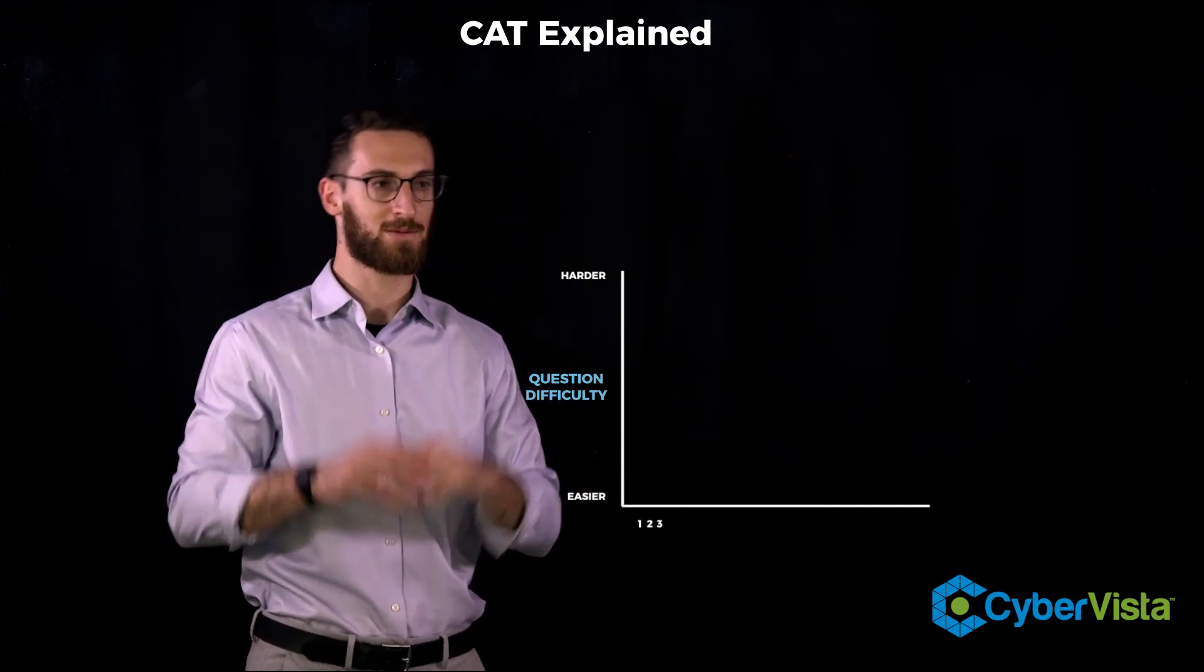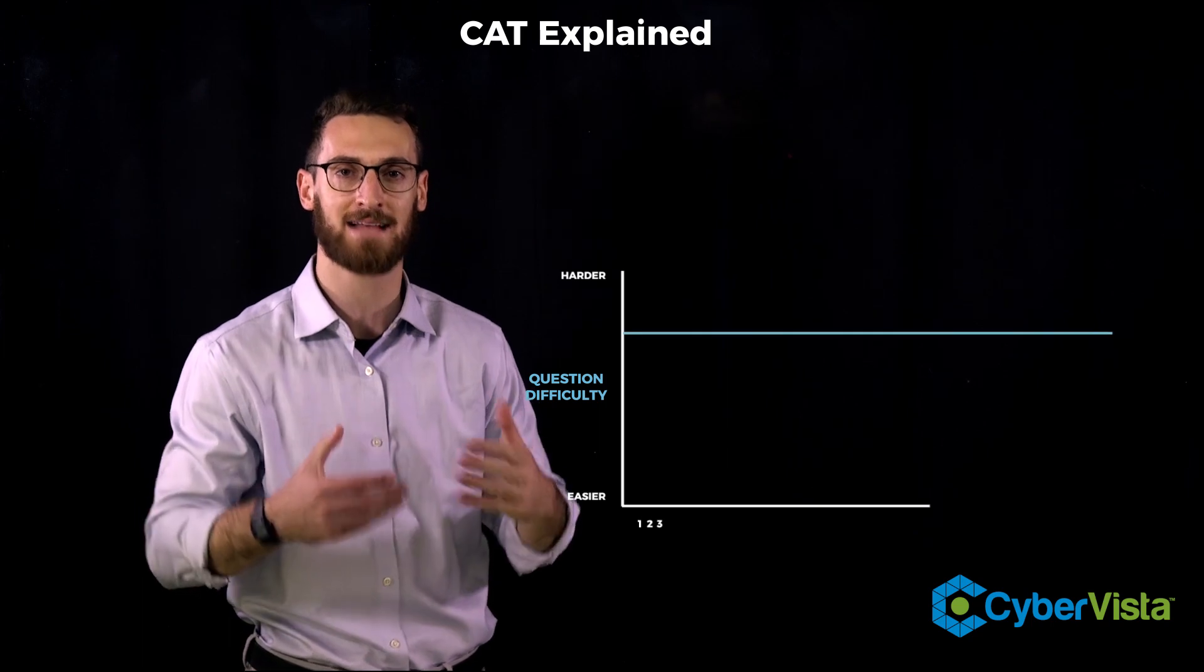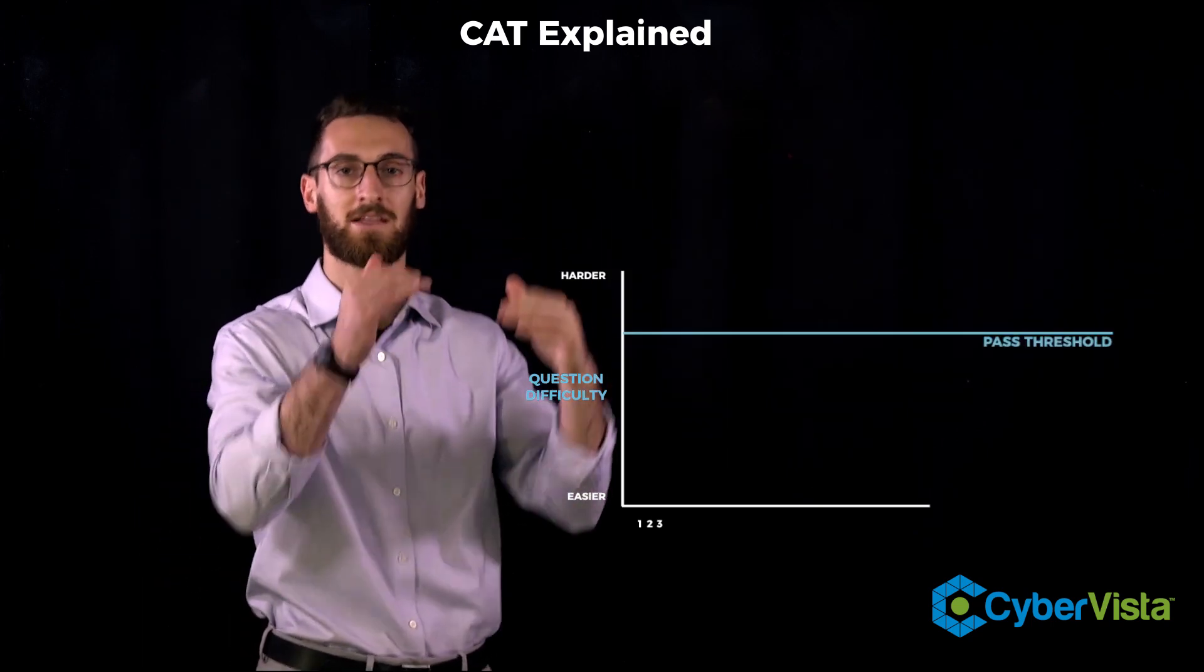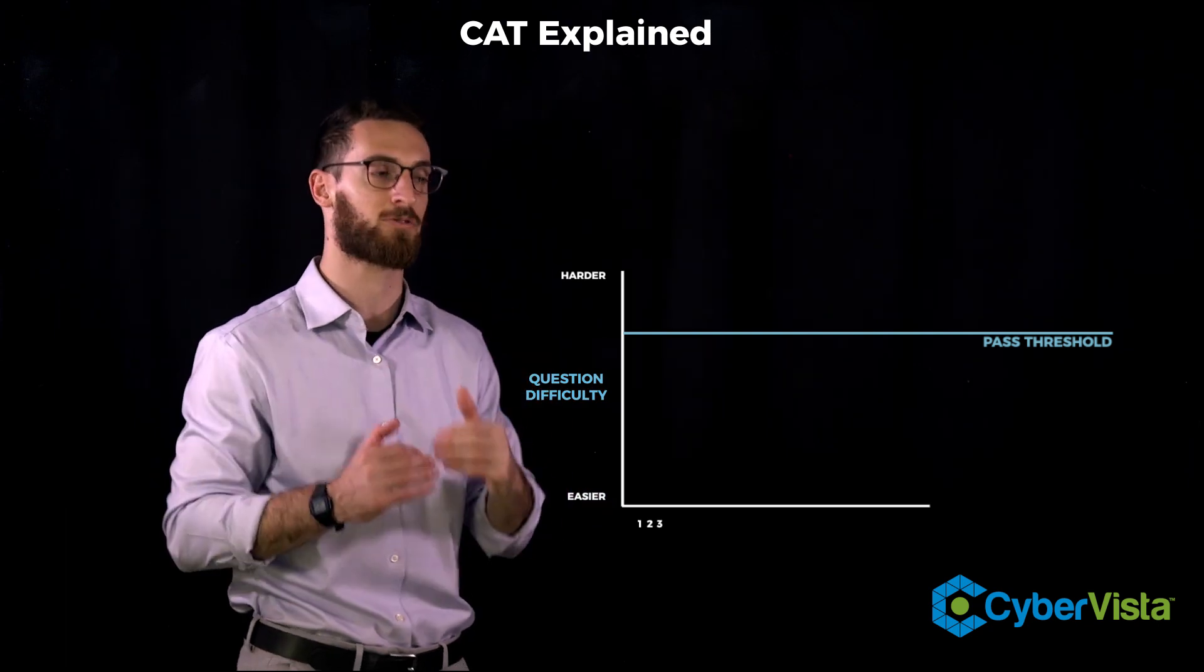The final important horizontal line we want to talk about is the pass threshold. This is basically just a mathematical line that's going to help the engine determine if you've passed or failed the exam.